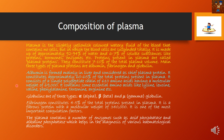Albumin is formed in the liver and constitutes 65 percent of total plasma proteins. It helps in the maintenance of blood pressure and osmotic pressure. There are three types of globulins: alpha, beta, and gamma globulin. Fibrinogen is a very important coagulation factor. Plasma also contains enzymes like acid phosphatase and alkaline phosphatase, which help in the diagnosis of various hematological disorders.